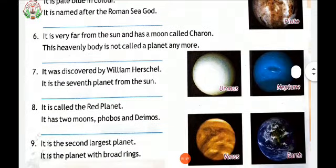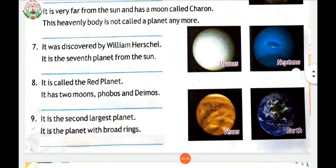It is called the red planet. It has two moons, Phobos and Deimos. It's Mars. It is the second largest planet. It is the planet with broad ring. It's Saturn.